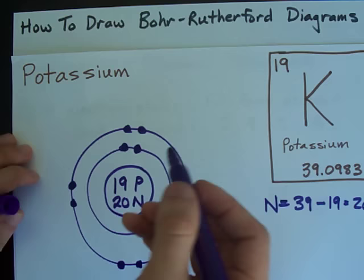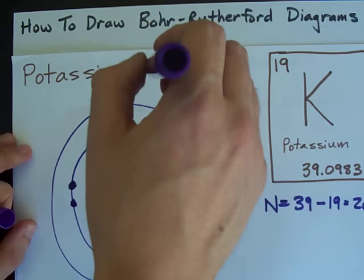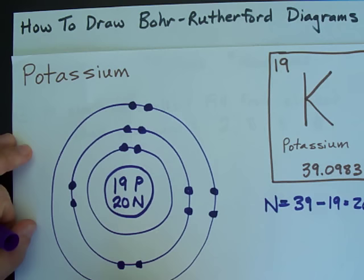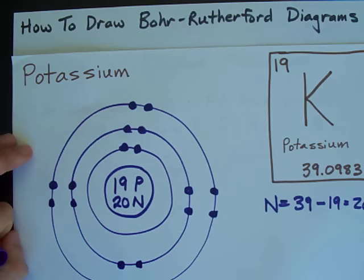I need 19. So, draw a third shell. I can put up to 8 in this one as well. 1, 2, 3, 4, 5, 6, 7, 8. And I still only have 18 electrons total.